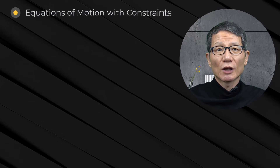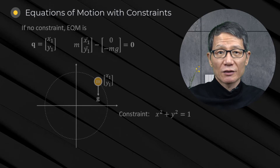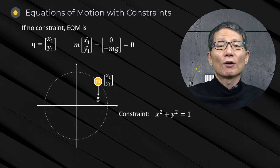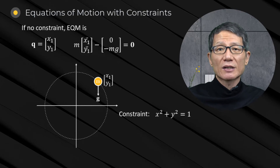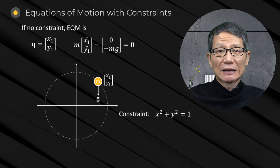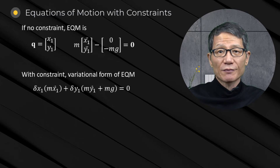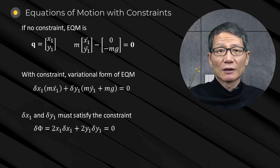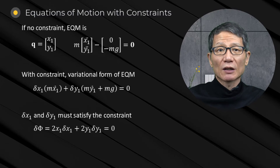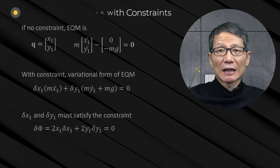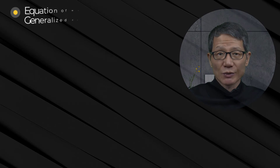Equation of motion with constraint. Suppose a particle moving along a circle. The equations of motion for the particle can be written in the variational form, and the variational form of the constraint must be appended as follows.